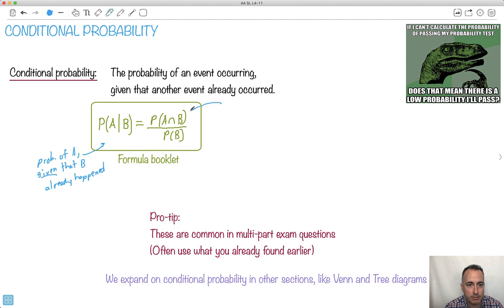This right here, remember what this symbol means? This is a probability of A and B occurring. So this is probability of A and B occurring. This is just probability of B. So this is how we do it in general. Here's the probability of B. This is the key to doing this.